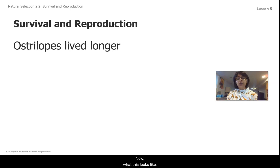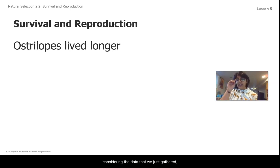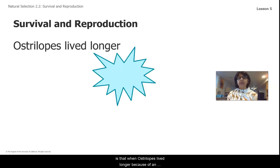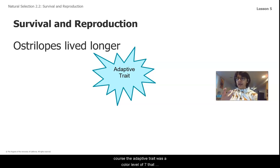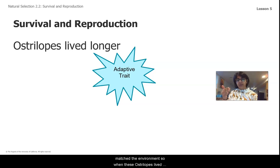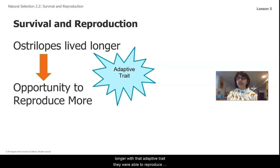What this looks like, considering the data that we just gathered, is that when ostrilopes lived longer because of an adaptive trait that they had — and in the simulation the adaptive trait was a color level of seven that matched the environment — so when these ostrilopes lived longer with that adaptive trait, they were able to reproduce more.